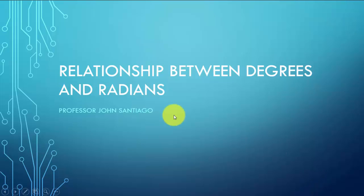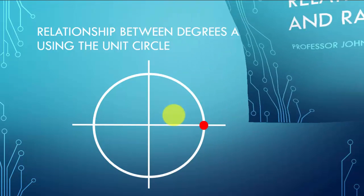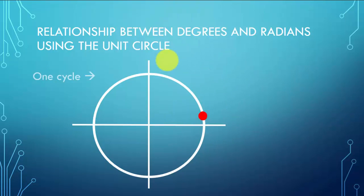Take a look at the relationship between degrees and radians. We're going to use the unit circle, and we know that one cycle encompasses 2π radians for a unit circle, since the circumference of this unit circle is 2π. Also, we know for this one cycle, this red dot traverses 360 degrees as well.